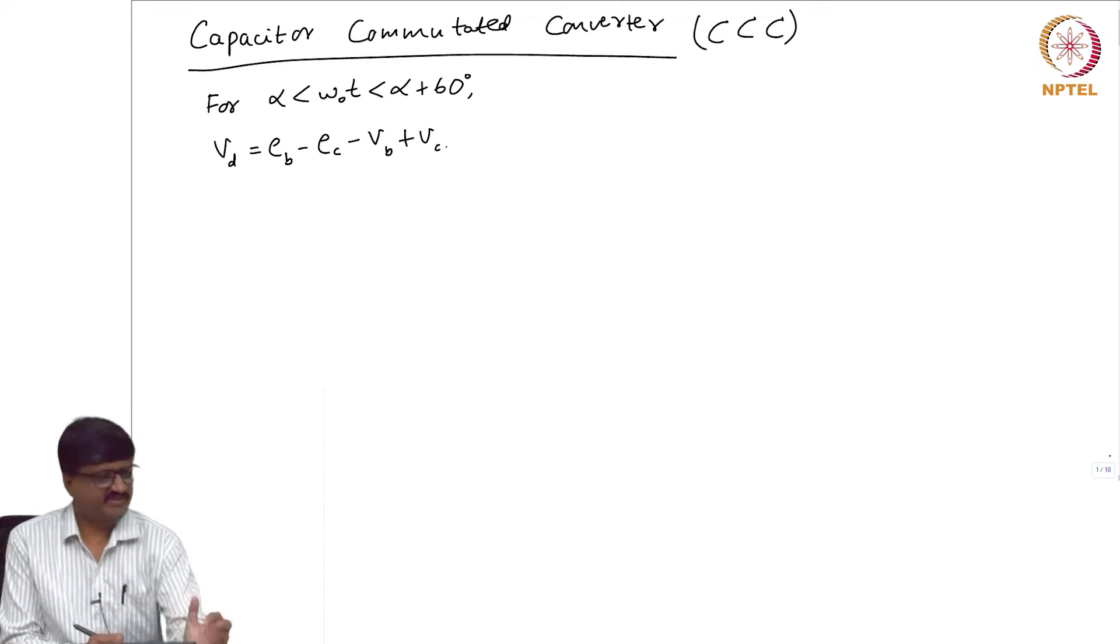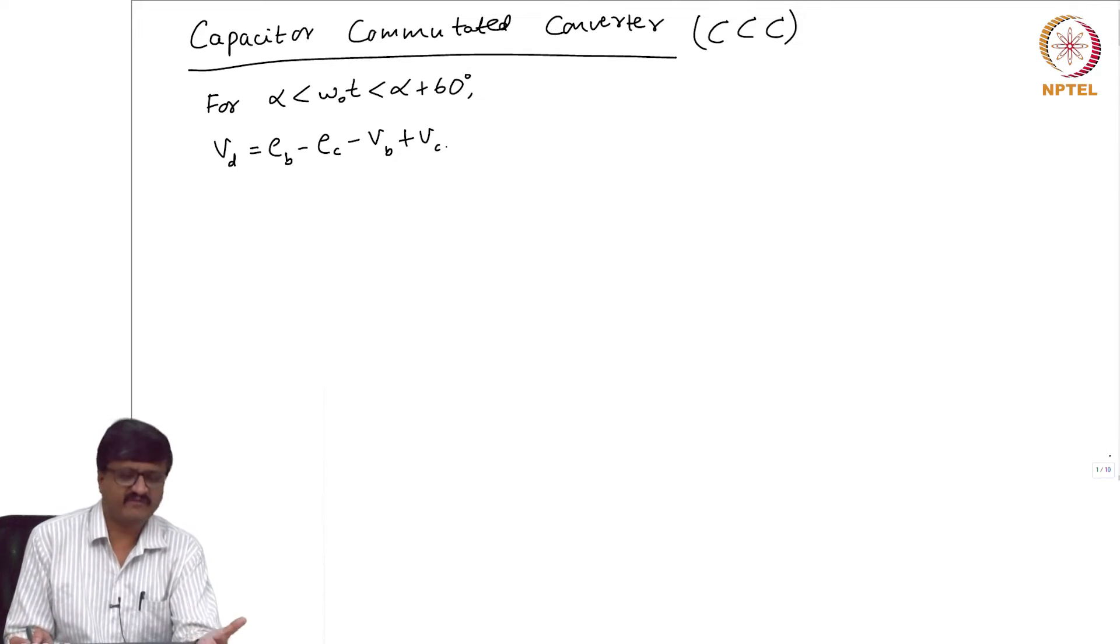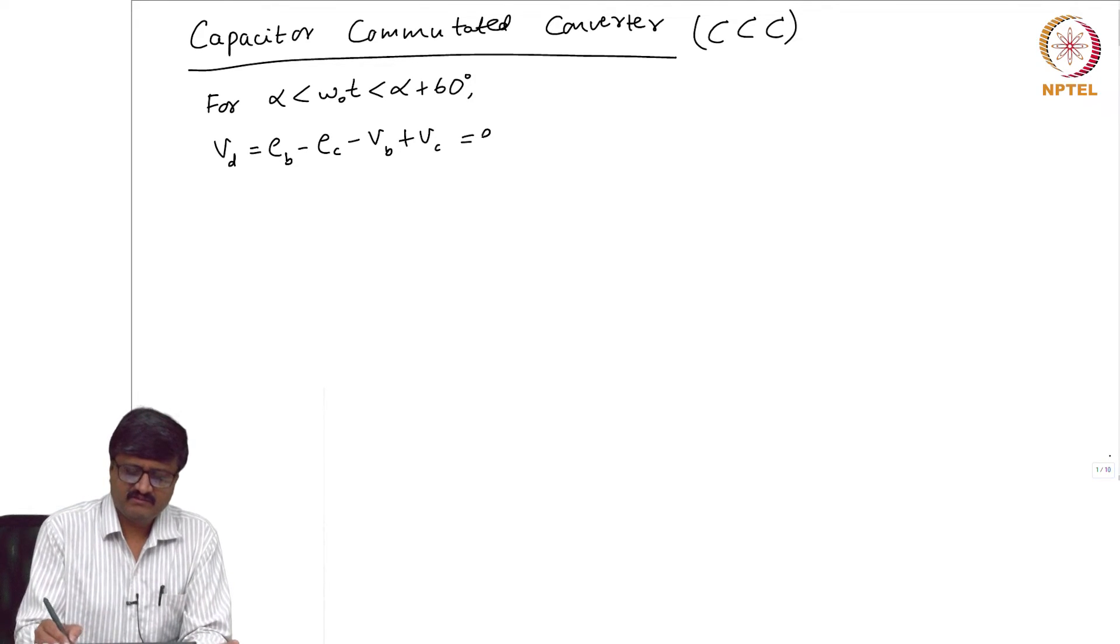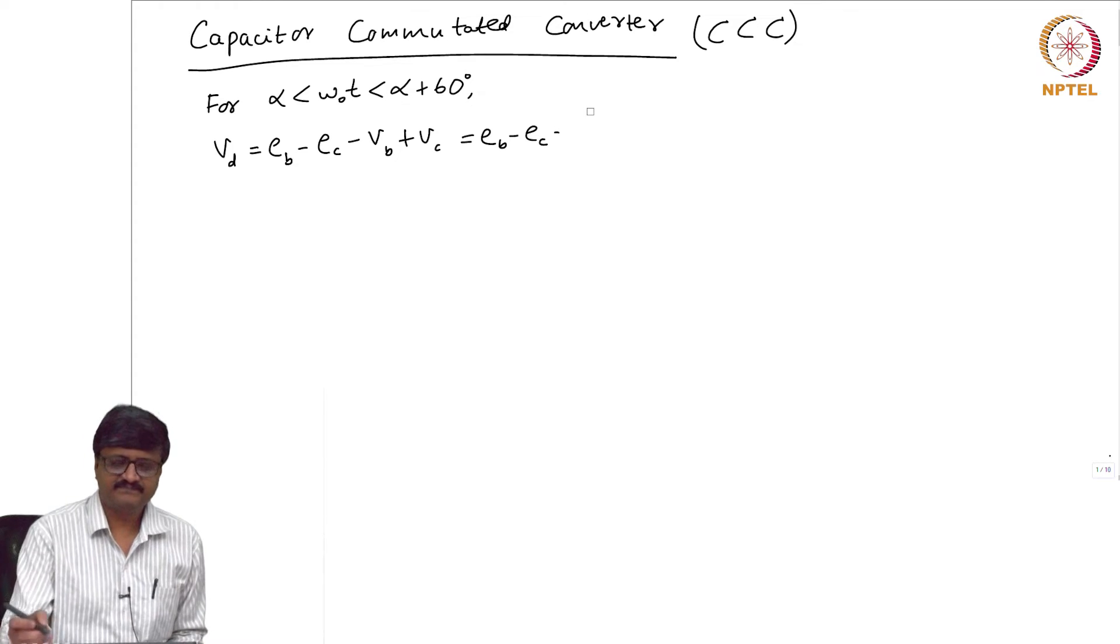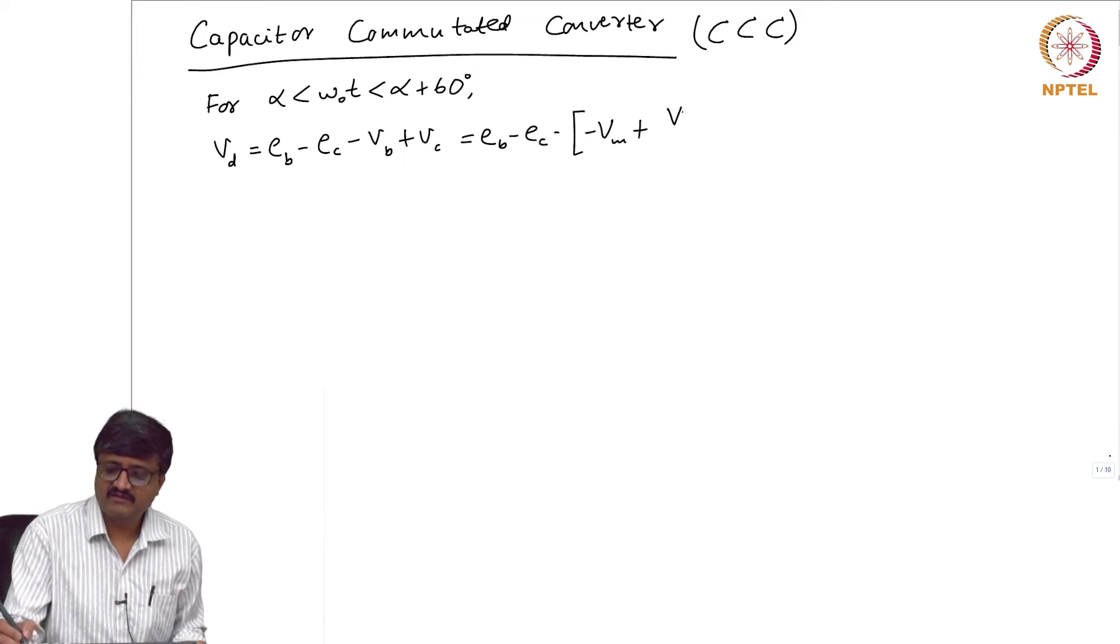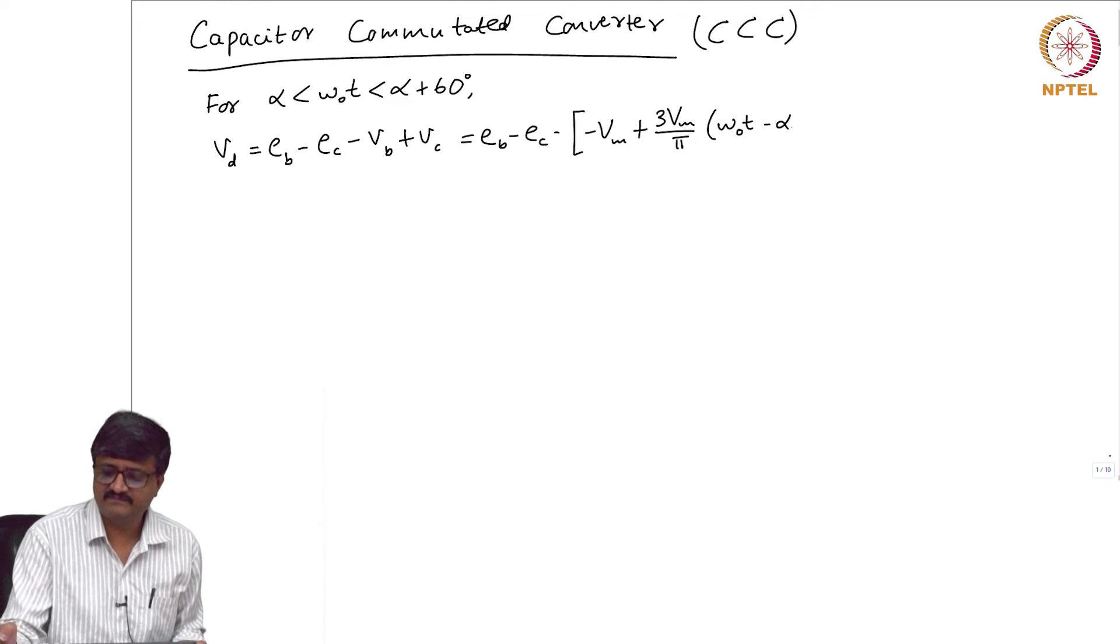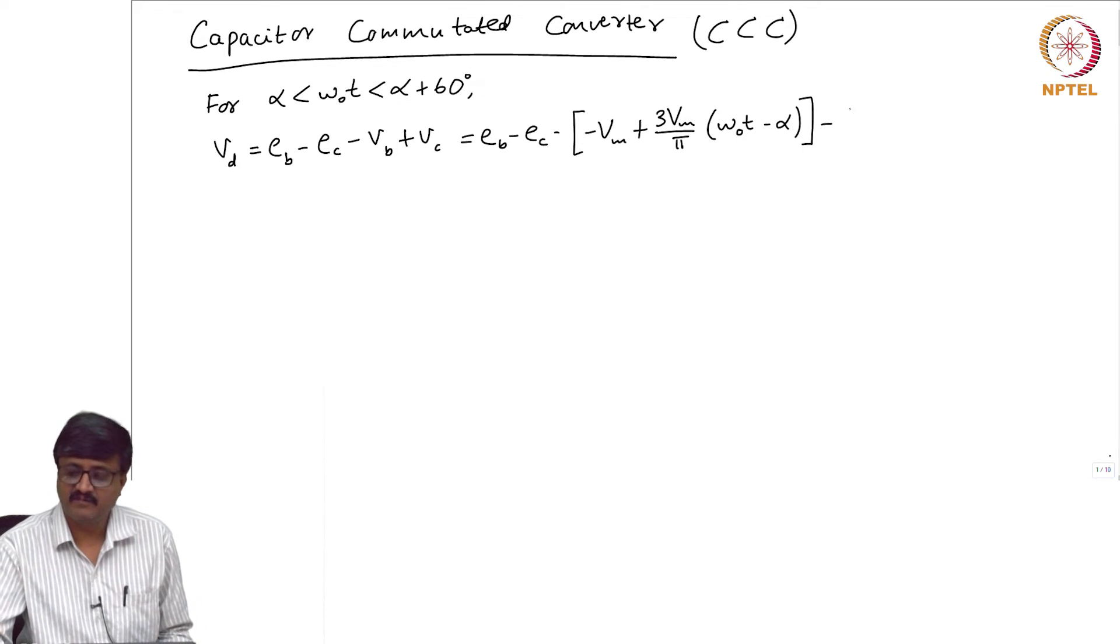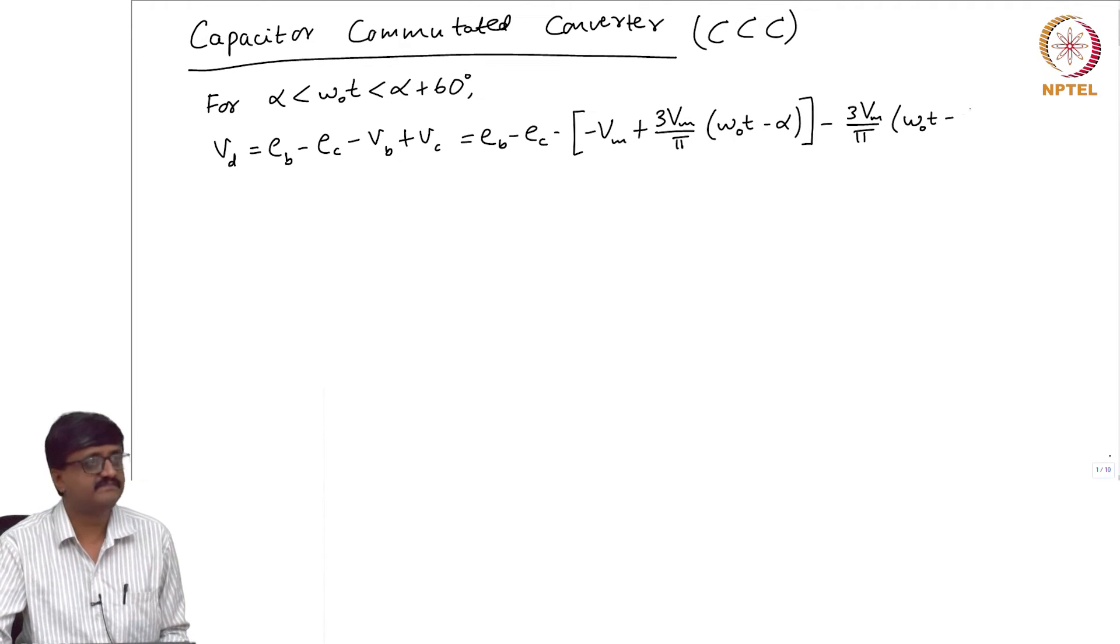Now we know the expressions for EB and EC, and we know the expression for VB. We have plotted VB. I will take this as EB minus EC minus what is VB? It is minus VM plus 3VM by pi into omega T minus alpha, that is minus VB. What about VC? Minus 3VM by pi, VM by pi omega T minus alpha.